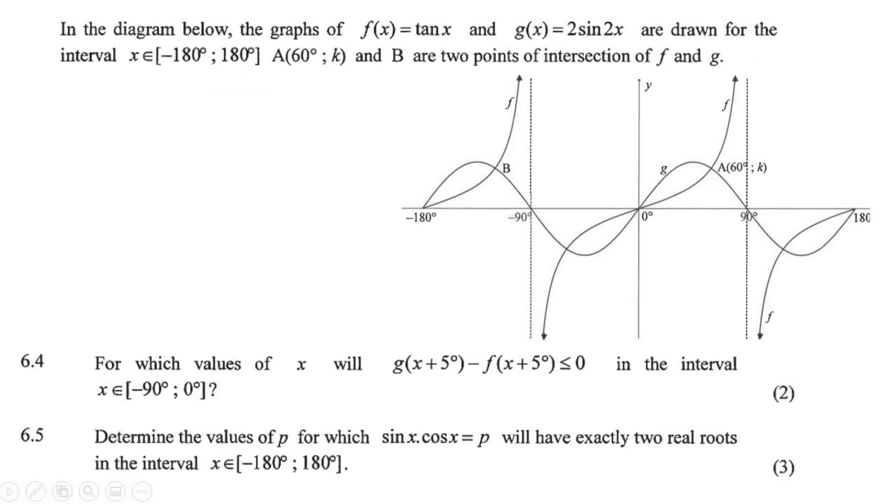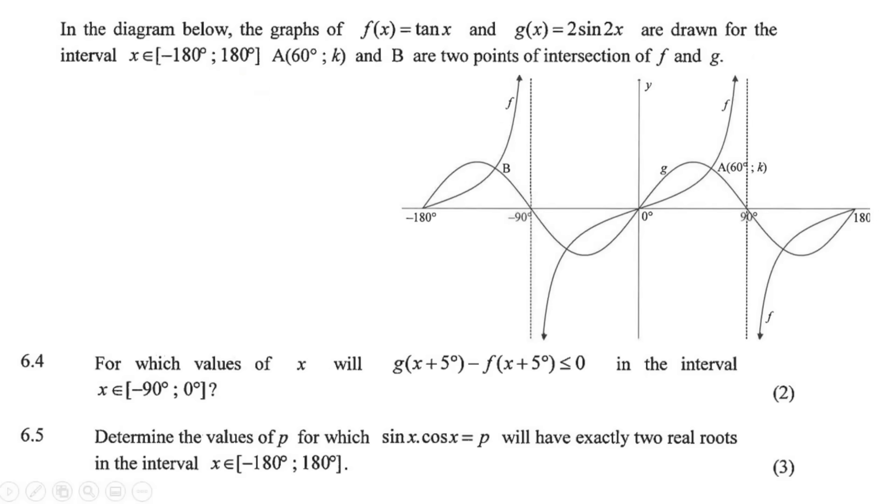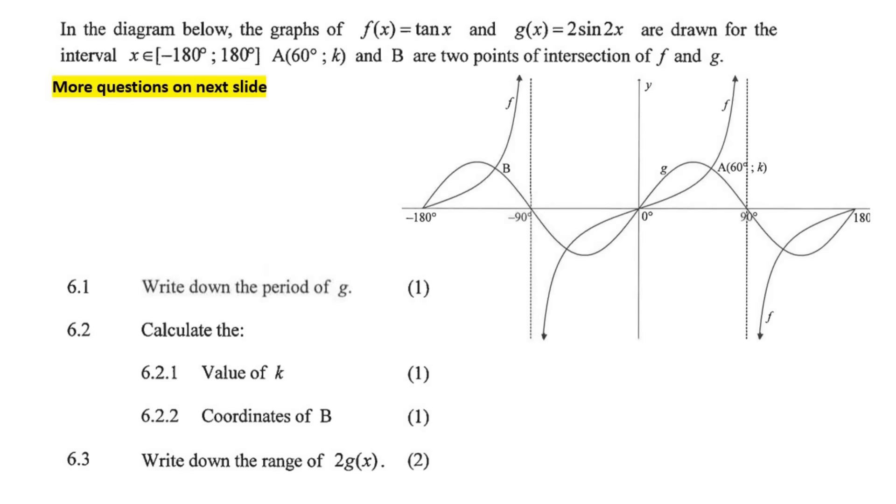So with this question, there will be more coming up over there. In the diagram below, the graphs of f, which is a tan graph, let's highlight. So f is a tan graph, just a normal tan graph. And then g(x) is a sin graph.